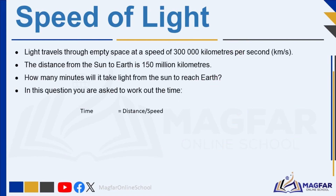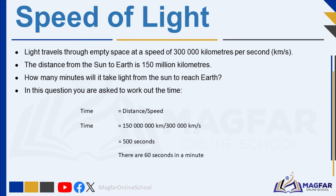In this question, we are asked to work out the time light takes to travel from the sun to earth. The formula to use is: time equals distance divided by speed. We divide the distance from the sun to earth, which is 150 million km, by the speed of light, which is 300,000 km per second. This gives us 500 seconds. There are 60 seconds in a minute, so dividing 500 by 60 gives us 8.3 minutes — meaning it takes light from the sun over 8 minutes to reach our eyes on earth.